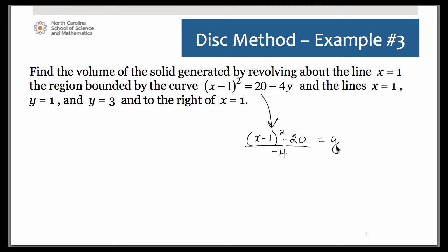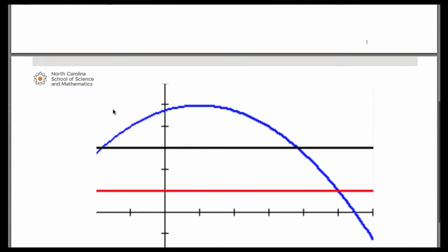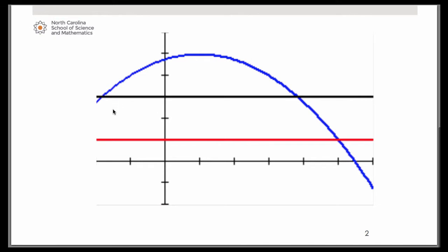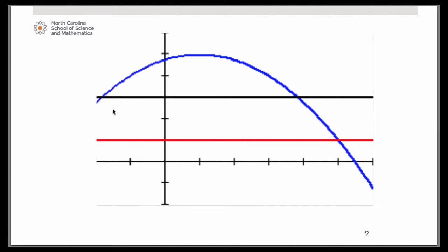So if you go ahead and do that, you can also enter in as y2 and y3 the lines y = 1 and y = 3. So when you get that set up, and I admit I did change my window a little bit, hopefully you have something that looks like this. The blue curve, that is the curve, that's the quadratic obviously, and you can see in red the line y = 1 and in black the line y = 3.